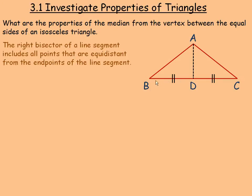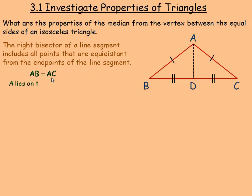Certainly D is the same distance from B as it is from C. In the diagram we're told that AB and AC are equal because this is an isosceles triangle. So A also lies on the right bisector of BC because it's the same distance from B as it is from C.